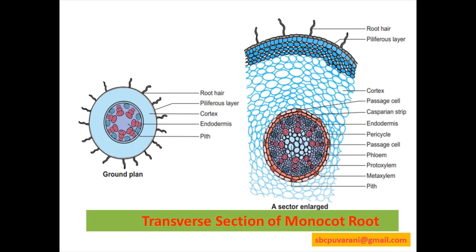Transverse section of monocot root: the outermost layer consists of parenchymatous cells without intercellular space. Stomata and cuticles are absent. Root hairs are single-celled. The cortex contains oval and rounded, loosely arranged parenchymatous cells.